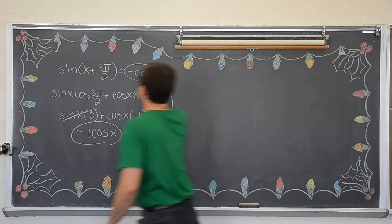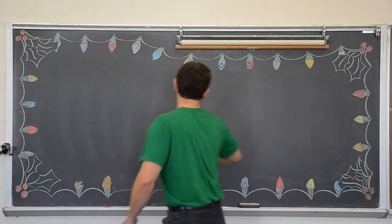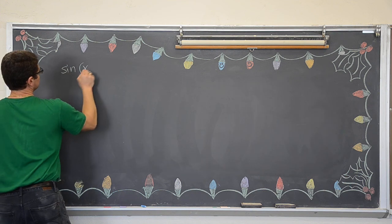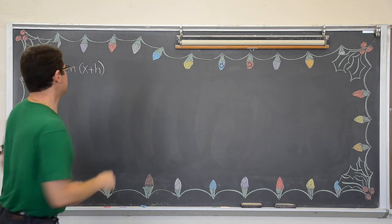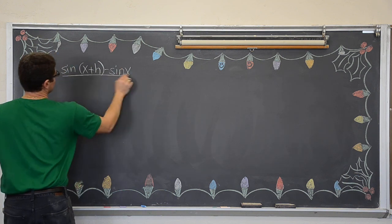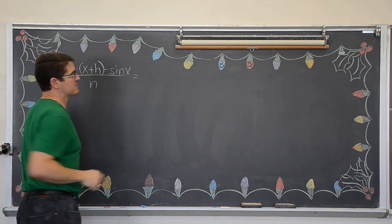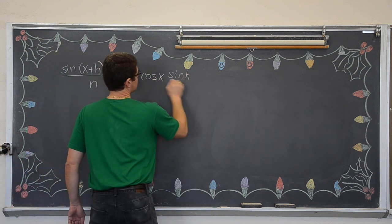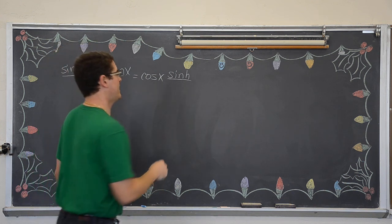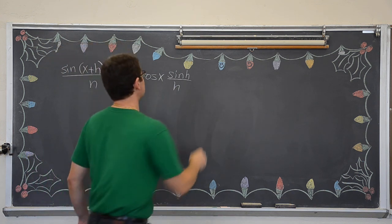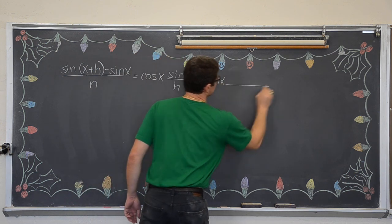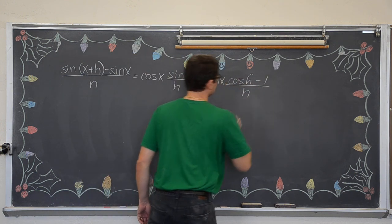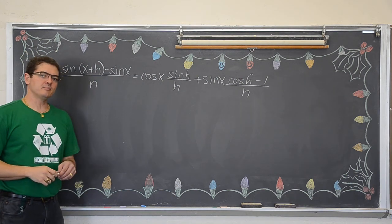Let's do something with a bit more meat to it. How about the sine of x plus h minus the sine of x, all over h. That is supposed to equal cosine x times sine of h over h, plus sine x times the quantity cosine h minus one over h. That was quite a bit to write out.